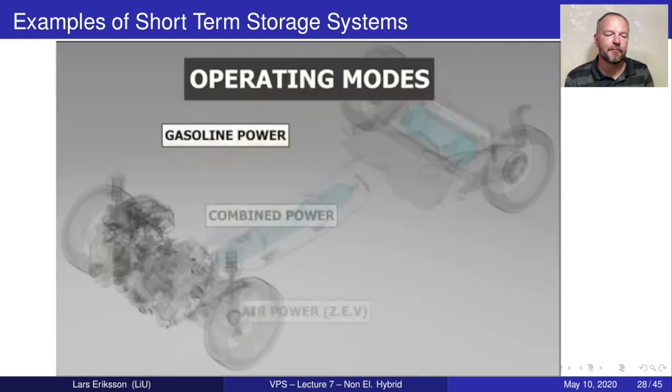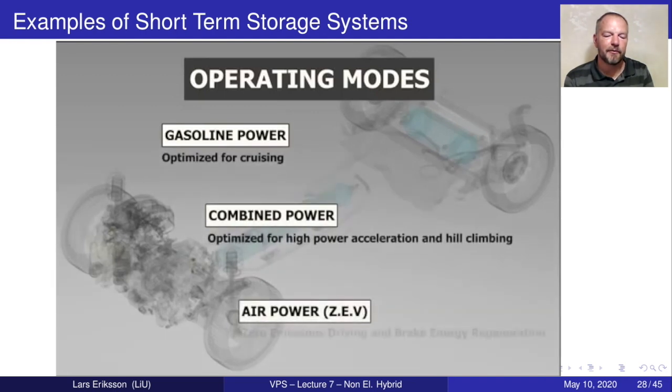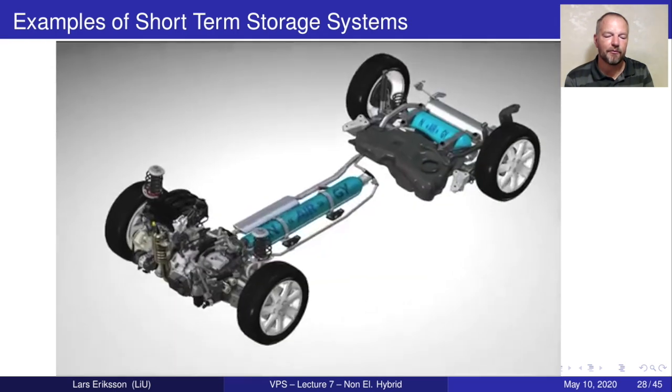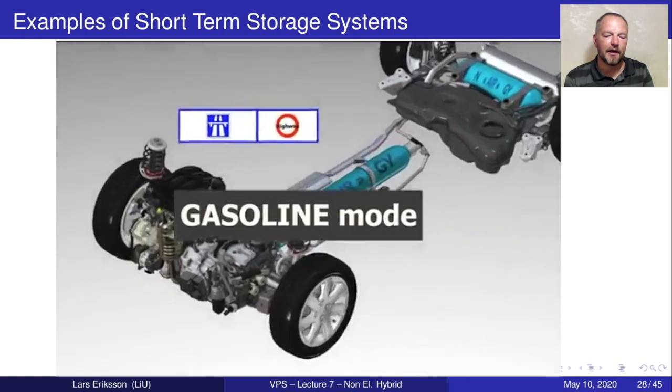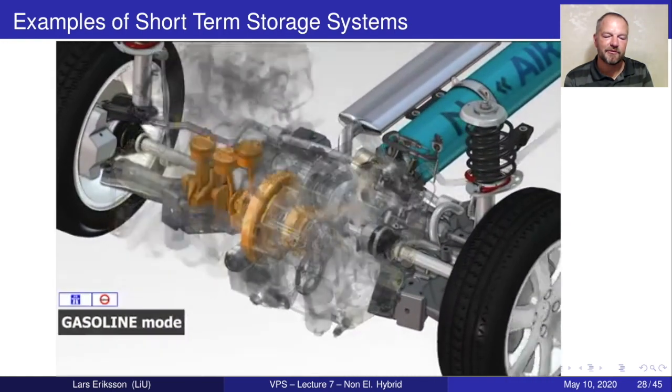We have different operating modes. We have pure gasoline which is optimized for cruising, we have the combined mode where we do boosting, and we have air power zero emission vehicle when we're running it with the hybrid mode. In highway driving we're using the combustion engine to drive the vehicle forward and we're not utilizing any other components.